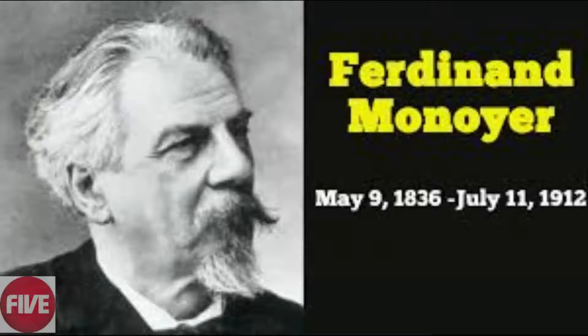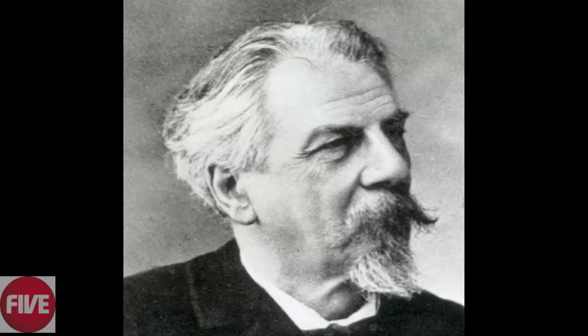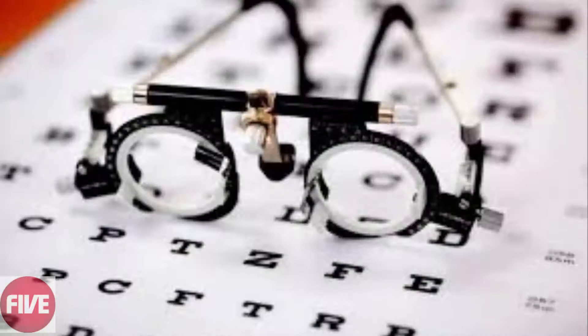Ferdinand Monnoyer: 5 Fast Facts You Need To Know. The May 9th Google Doodle celebrates the life of Ferdinand Monnoyer, the famed French ophthalmologist who created the diopter, a unit of measurement for vision still used today. He also invented the Monnoyer chart. May 9, 2017 would mark Monnoyer's 181st birthday. Although his best-known achievements were made over 140 years ago, his work is still important today, especially for those who need glasses.